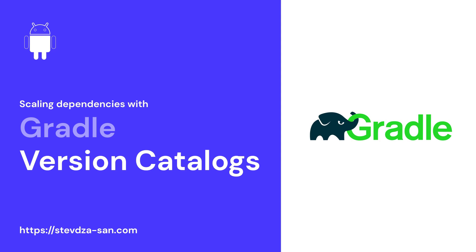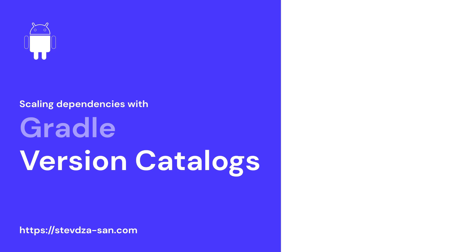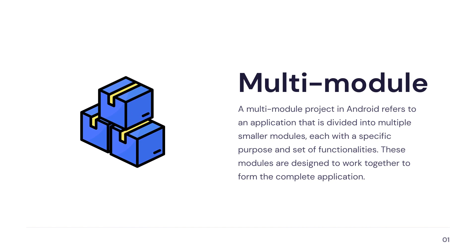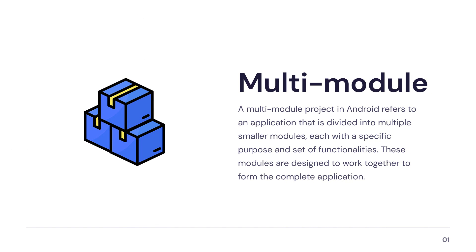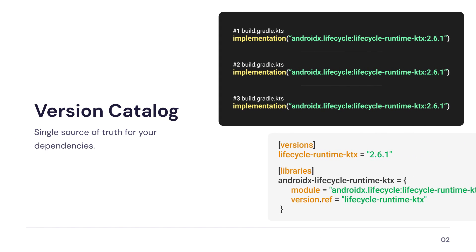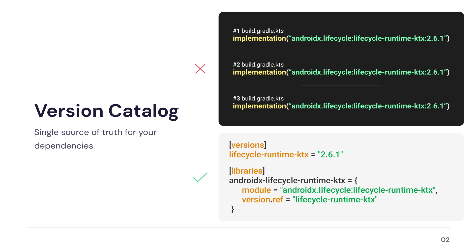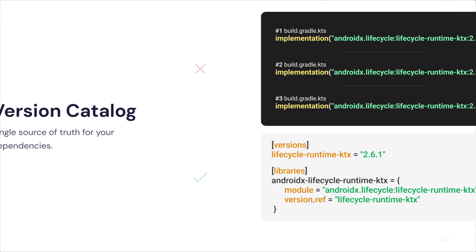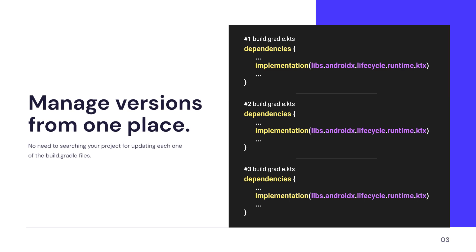Version Catalog is a Gradle mechanism for managing your dependencies and their respective versions from one place. Its main advantage is using it inside a multi-module project. Instead of repeating your dependencies and their versions in multiple different Gradle build files, you declare them in one place. That way, you can update your dependency versions in one place rather than searching and checking all your Gradle build files for updates.